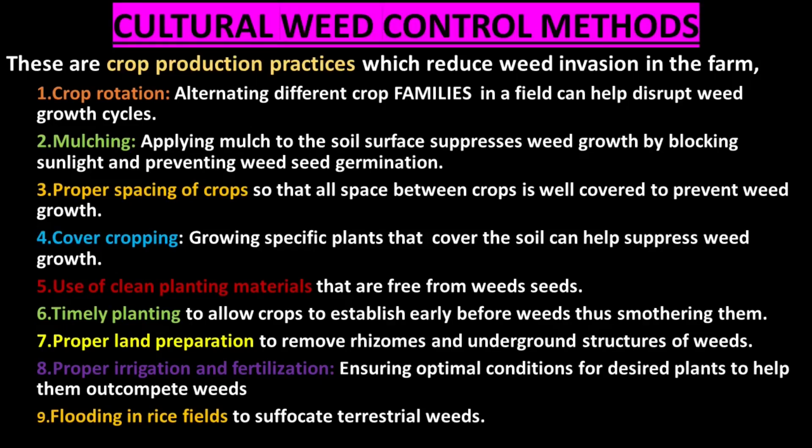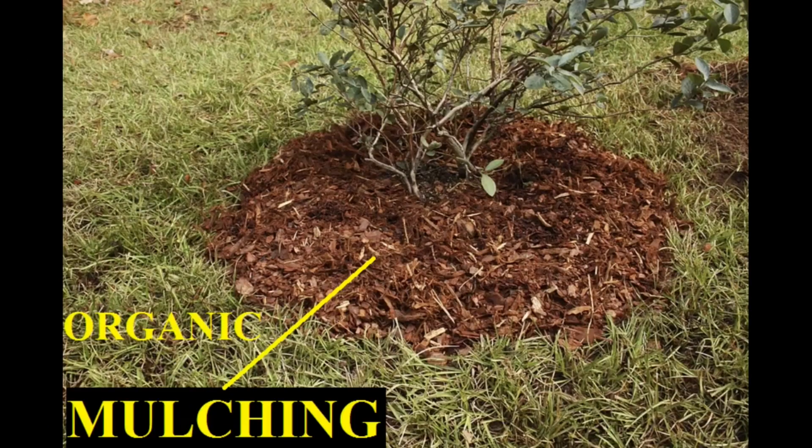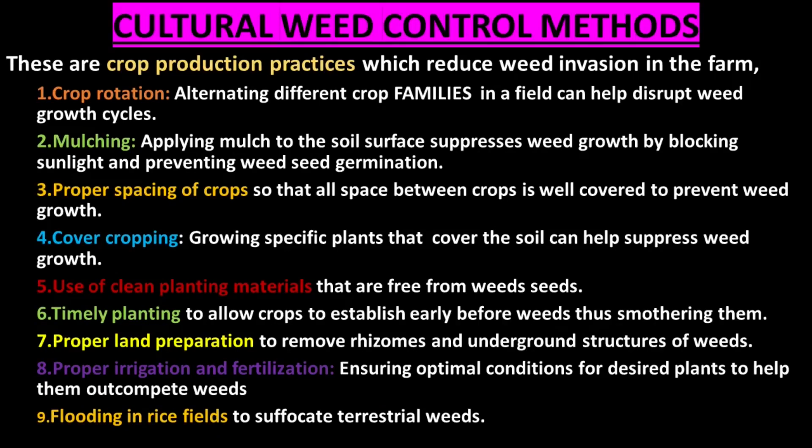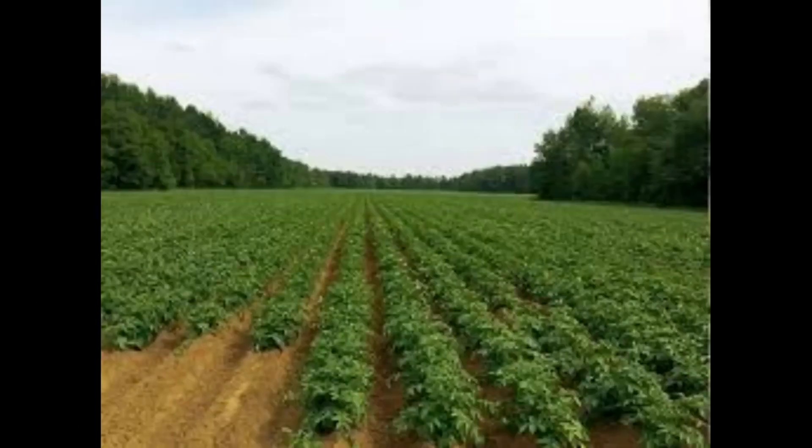Cultural methods include crop practices which reduce weed invasion in the farm. They include crop rotation, which involves alternating crop families in the field to help disrupt the weed cycle. Mulching involves applying dry plant materials on the soil surface to suppress weed growth by blocking sunlight and preventing weed seeds from germination. Proper spacing of crops ensures that all space between crops is well covered to prevent weed growth.